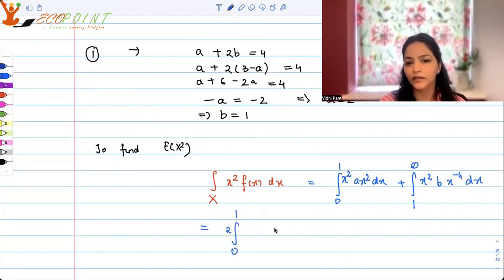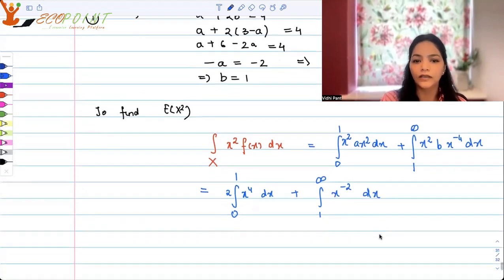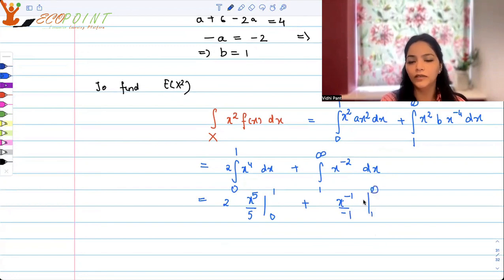So 1 outside, 1 to infinity, x to the power minus 2 dx. And let's integrate. So you will get 2, x to the power 5 upon 5, 0 to 1, plus x to the power minus 1 upon minus 1, 1 to infinity. So it's going to be 2 by 5 from here, plus it's just going to be 1 from here. So 2 by 5 plus 1 will give you 7 by 5.